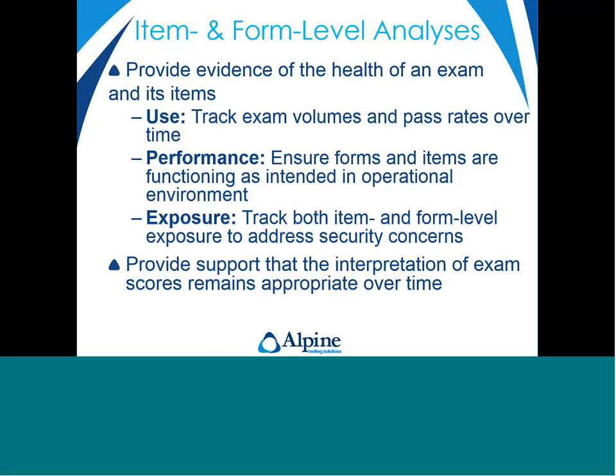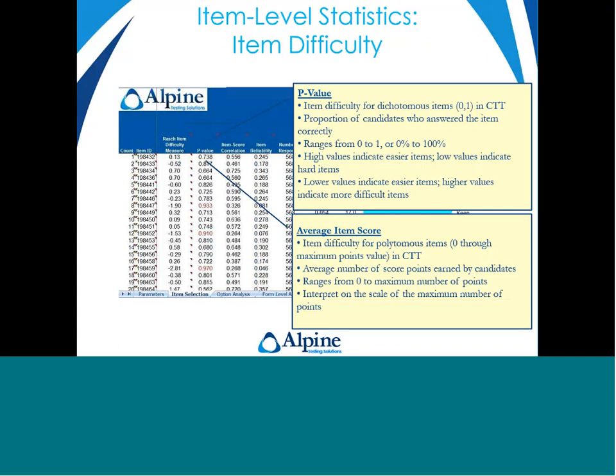The types of statistics I'll be highlighting over the next few slides will really be looking at the use of the exam — a form-level statistic — the performance of the exam at both item and form levels, and exposure. Exposure will be dealt with at a form-level approach here, although that's not to say item-level exposure approaches aren't also very valuable. I'm now going to quickly run through the typical statistics you may receive from an item and form level analysis.